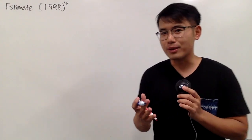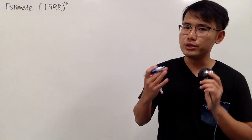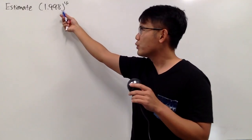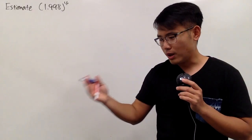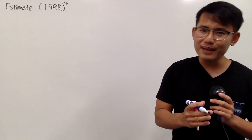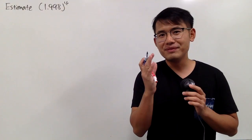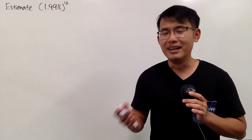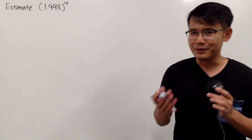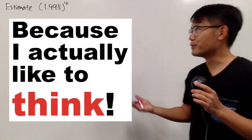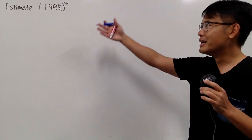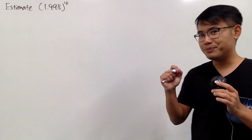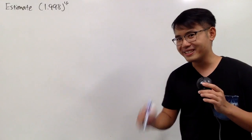In this video, I'll show you how to use calculus to figure out a really good approximation for 1.998 to the 4th power. We can just write down 1.998 four times and multiply it out, but I'll leave that to you. I challenge you to do that without a calculator and leave a comment below letting us know how long that takes. I'll show you my approach without any calculator, using calculus along the way.